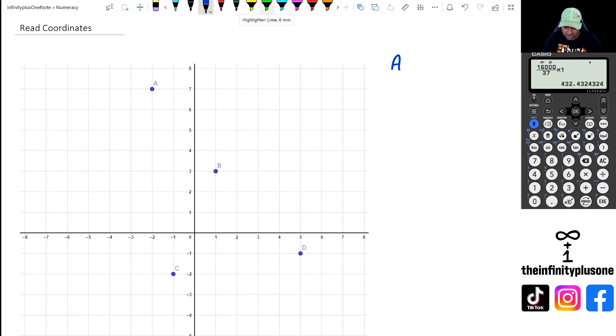the x-axis, if you look at it, that's going to be at negative 2, and along the y-axis it is going to be at 7. So point A is going to be written as negative 2 and 7.